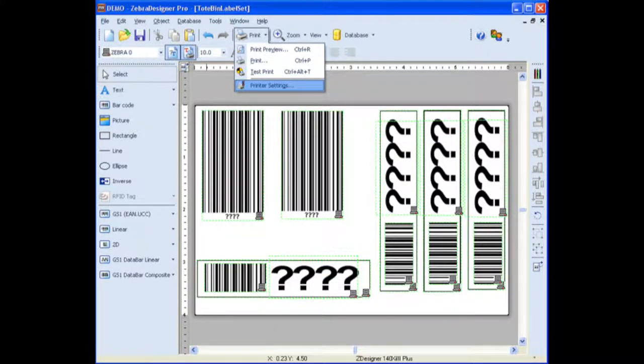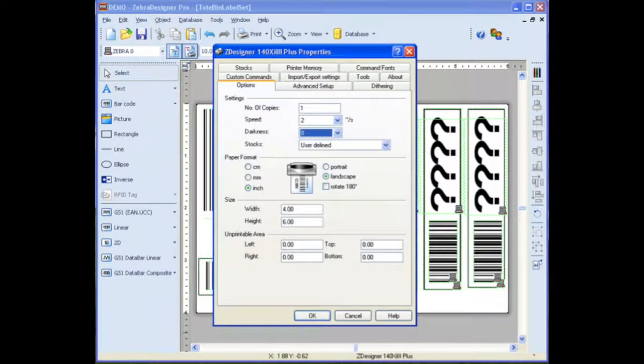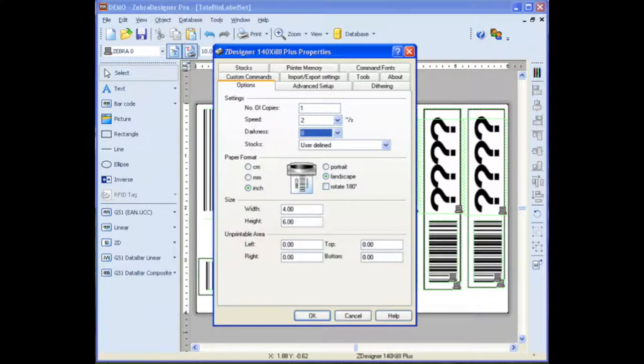The label template will load and then you would select the printer settings drop down option. The speed and darkness parameters may need to be adjusted to 2 and 8 respectively. These settings were found to work reliably while different settings may cause the barcodes to be unreadable.